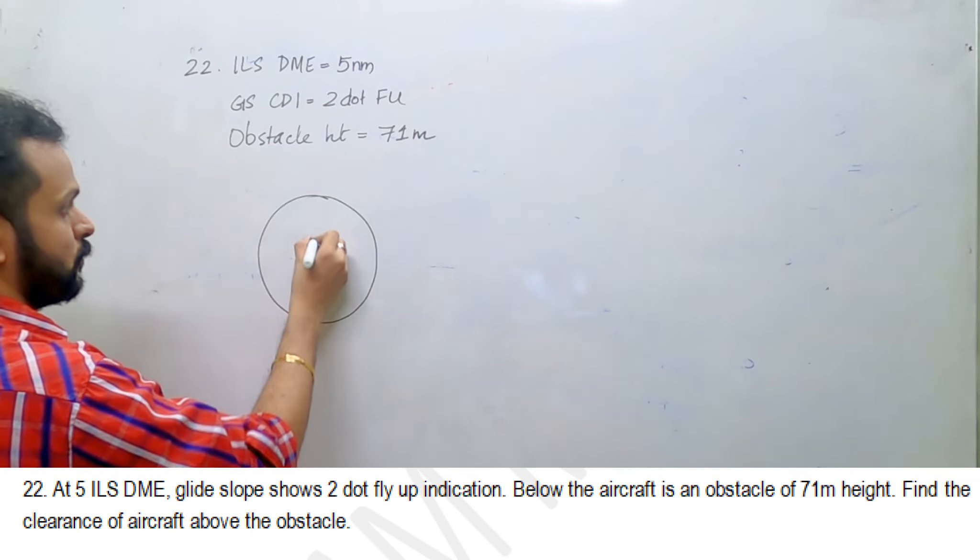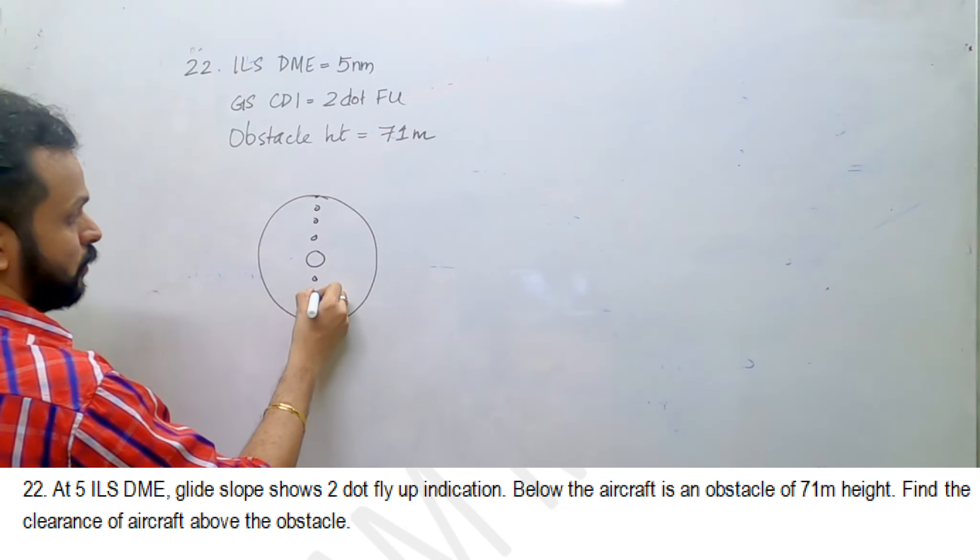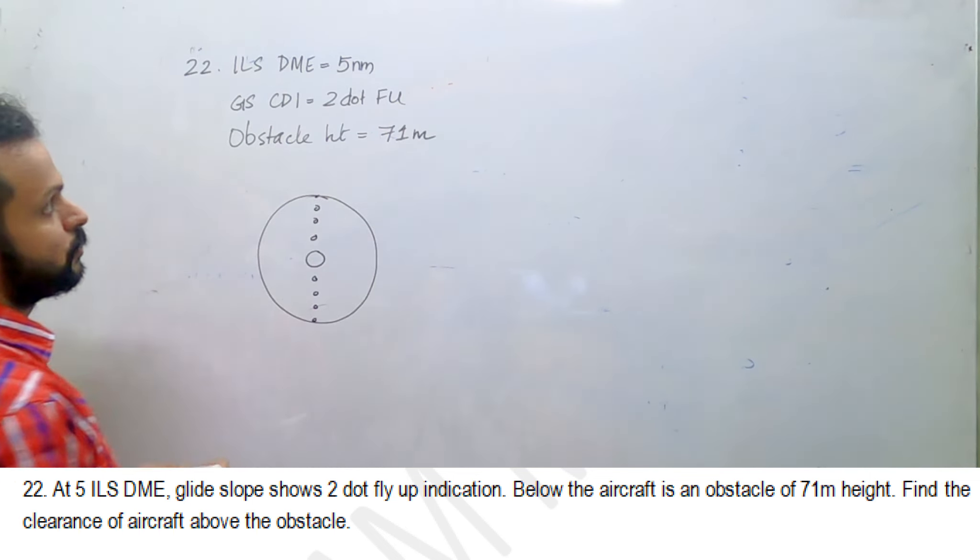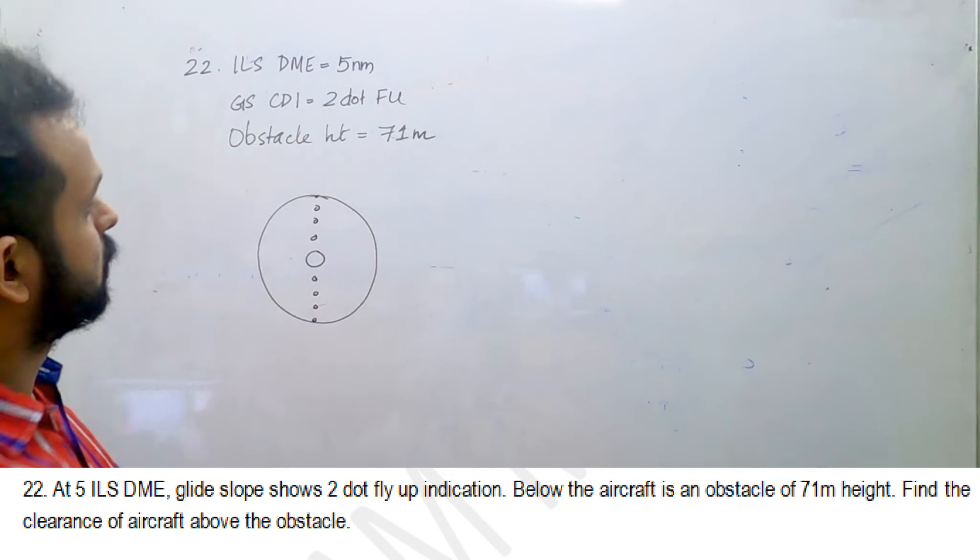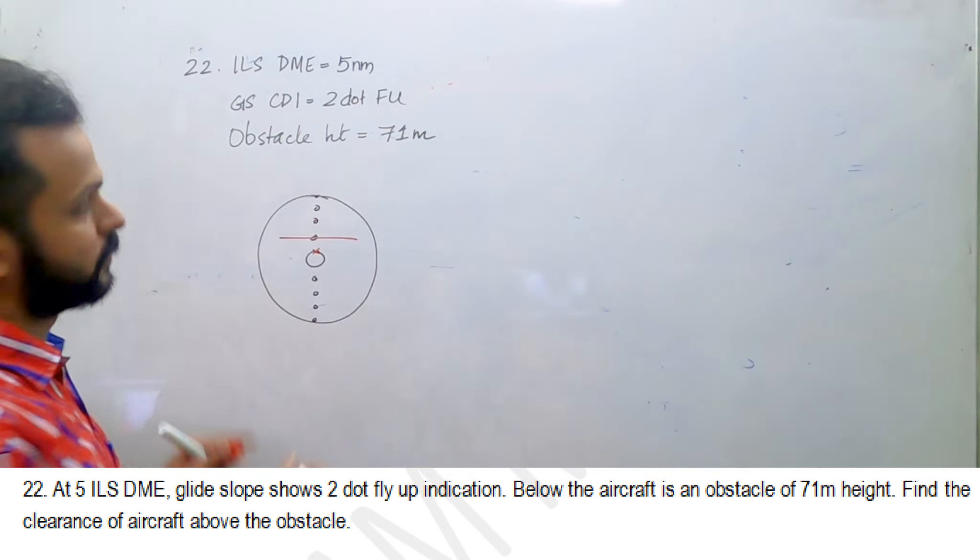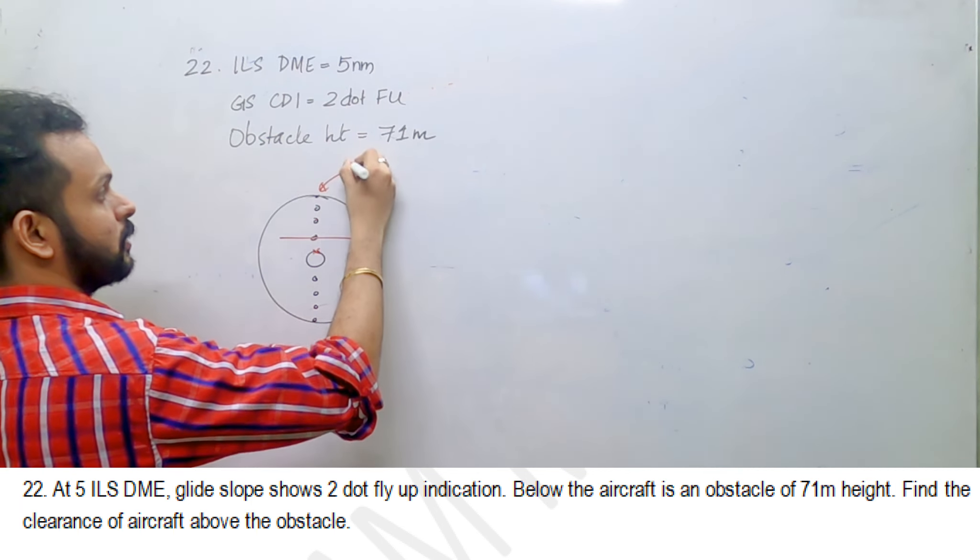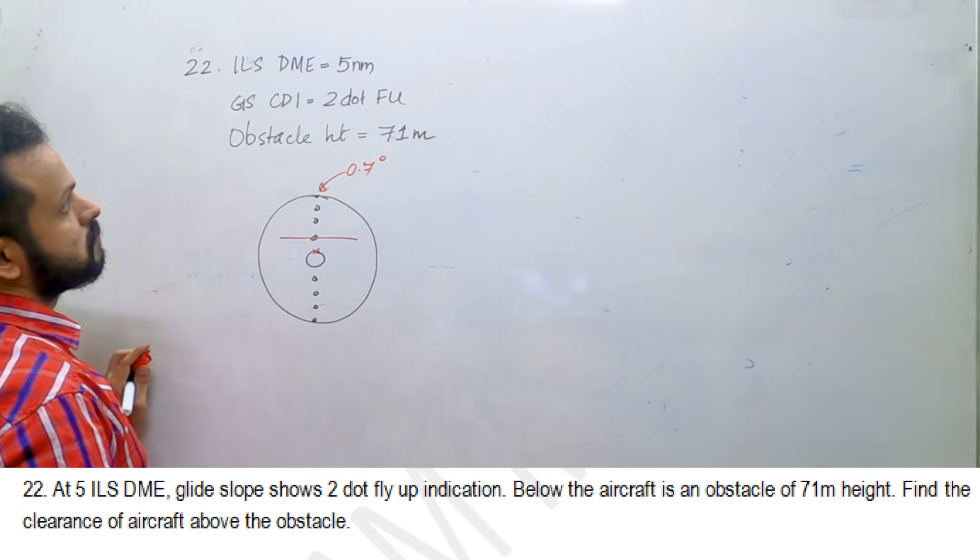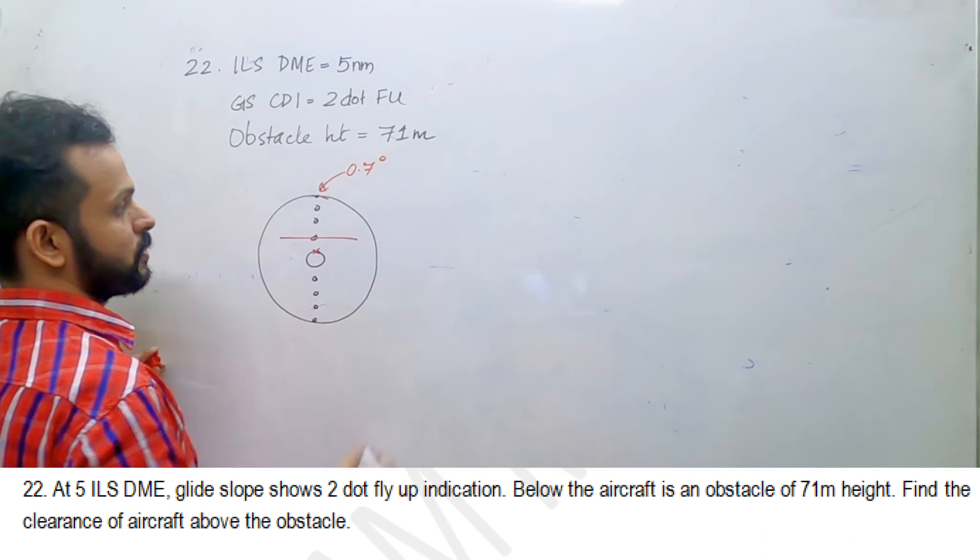We don't bother about localizer here and we assume a five dot system. It is showing two dot fly up - the first dot, second dot fly up. What is the maximum full scale deflection of the glide slope CDI? 0.7 degrees.